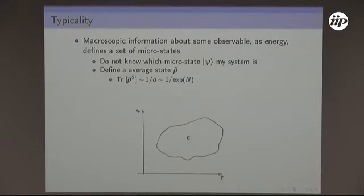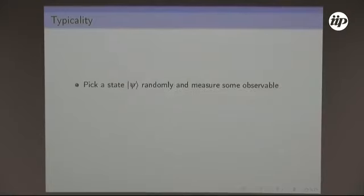I define this average state. In the micro-canonical case, for example, I have the identity. So somehow I give up having a complete description and put in probabilities by hand. The idea is I'd like not to do this, because I believe the system, even though I'm describing it as an ensemble, is actually in a definite pure state. So why does the ensemble description give the right results?